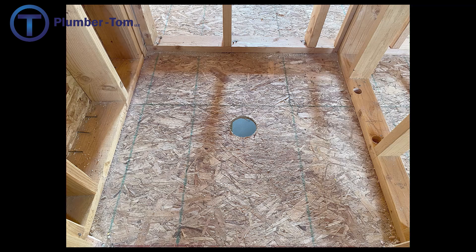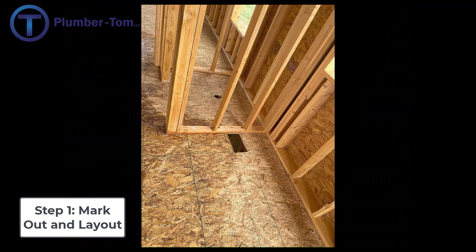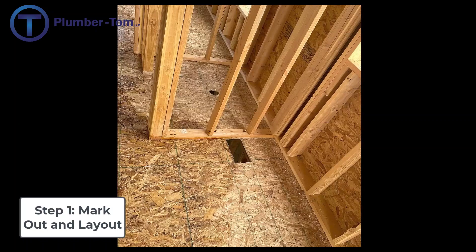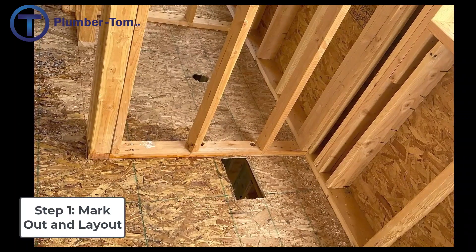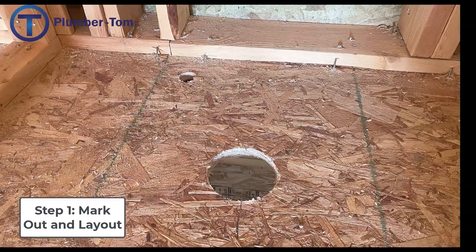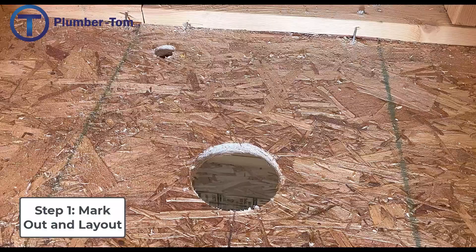The first step in the drainage waste and vent installation process is to mark out. This is where we lay out everything — where the fixtures go. You need information about the fixtures: what they are, their size, the center of drain or center of fixture locations. You also have to have some understanding of the code and what the minimums are for space between fixtures and space away from a wall.